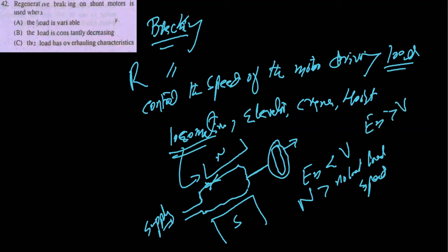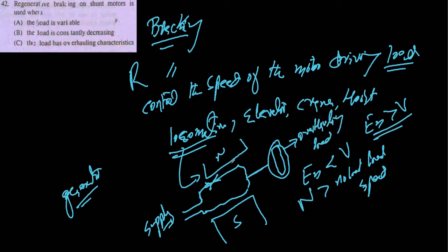When EB is greater than the supply voltage, the motor is now acting as a generator. Instead of the supply giving current, it absorbs current. This happens when an overhauling load acts as a prime mover — when it acts as a prime mover, the motor becomes a generator. So regenerative braking on a shunt motor is used when the load has an overhauling characteristic — that is the correct answer.